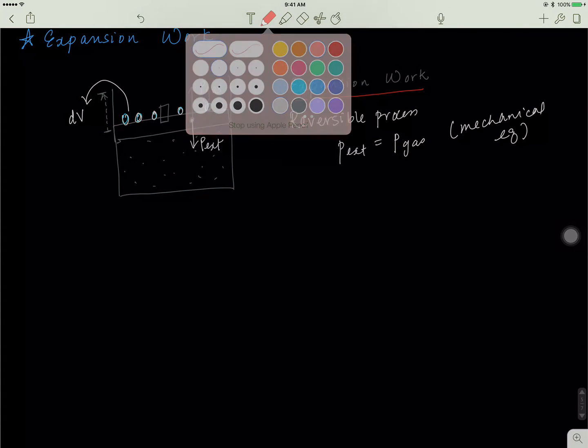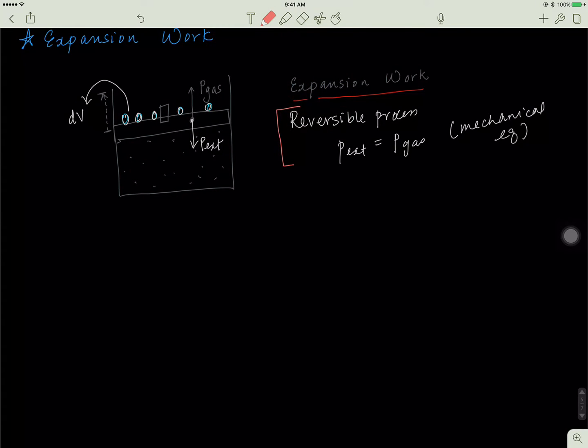That means that at every point, p gas is equal to p external - the pressure caused by these little pebbles. So for a reversible process, p external equals p gas. It's something called mechanical equilibrium.